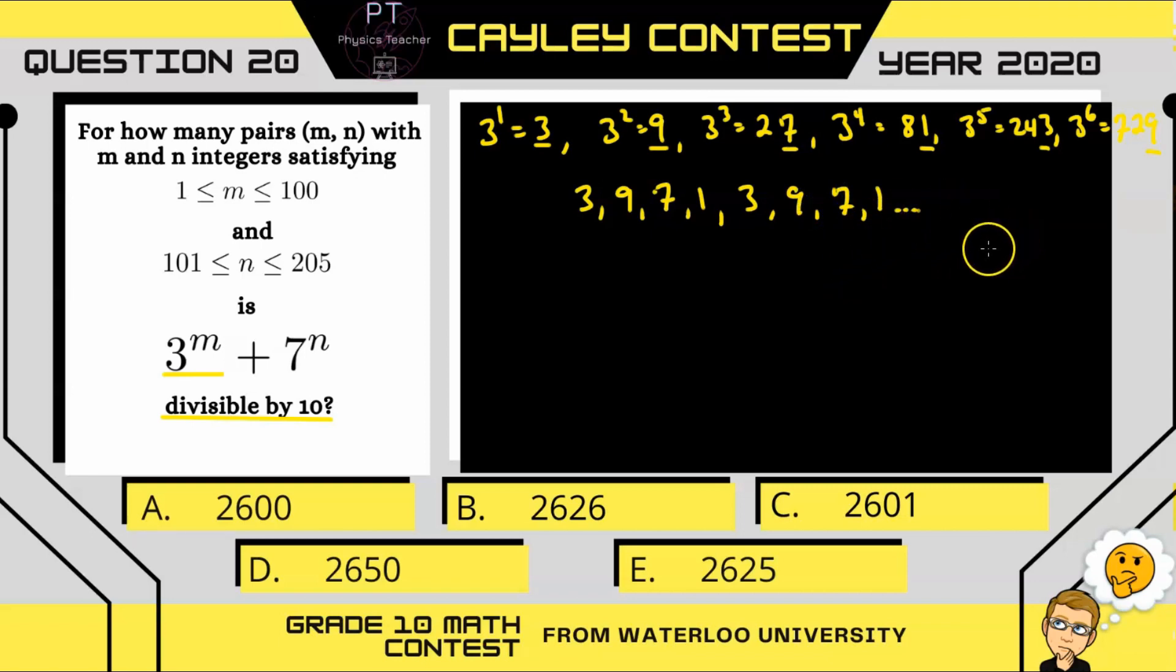And this is going to continue forever because when you're looking at the ones digit and you're multiplying integers together, you only care about the ones digits that you're multiplying. And since the ones digit is 3, 9, 7, and 1, once we repeat back to 3 and we keep multiplying by a factor of 3, that ones digit is just going to repeat over and over again.